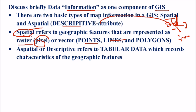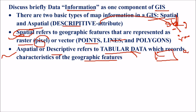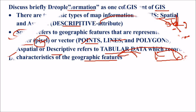GIS has two data types: spatial and aspatial. Aspatial or descriptive data refers to tabular data which records characteristics of geographic features. This may be stored in a file or any CSV file. You can extract it and link it with the spatial data, informing that this spatial data is described by various attributes.